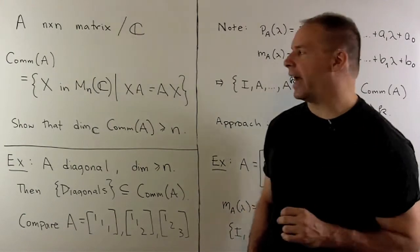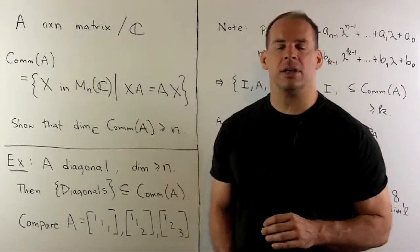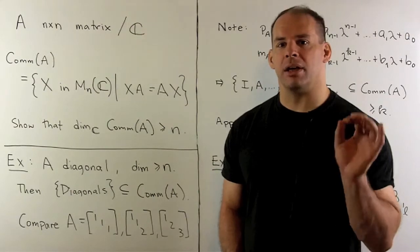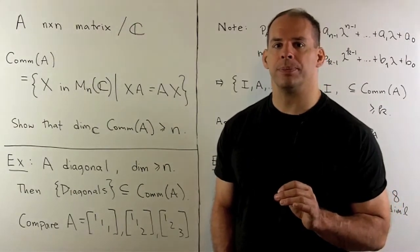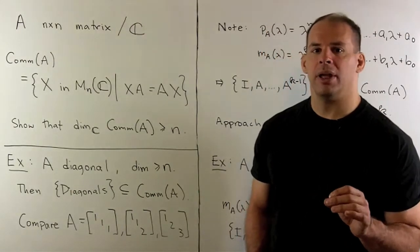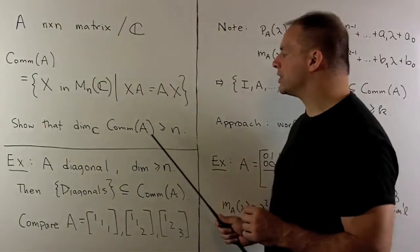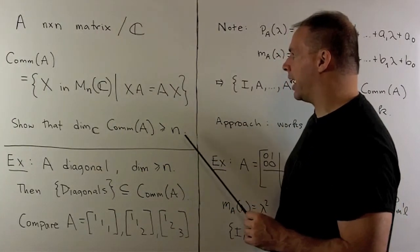Now, the commutant of A will be a subspace of the vector space of n-by-n matrices. We want to show that the dimension of our subspace is greater than or equal to n.